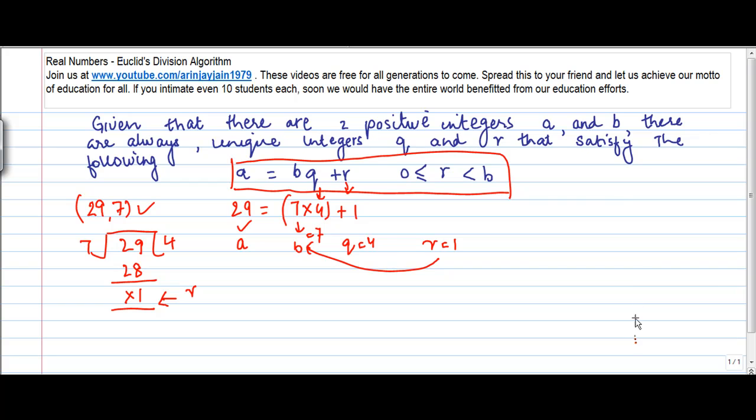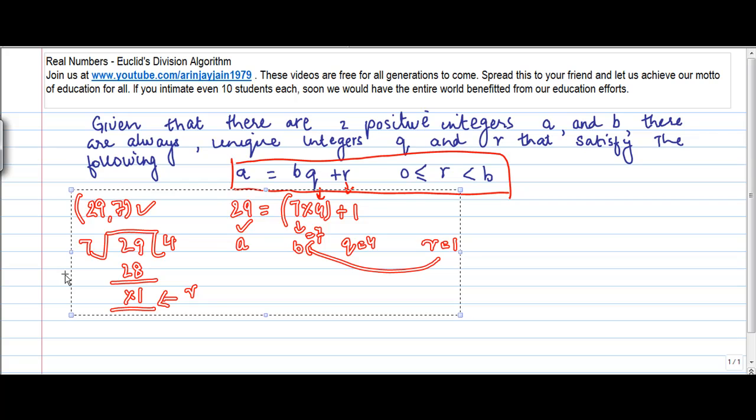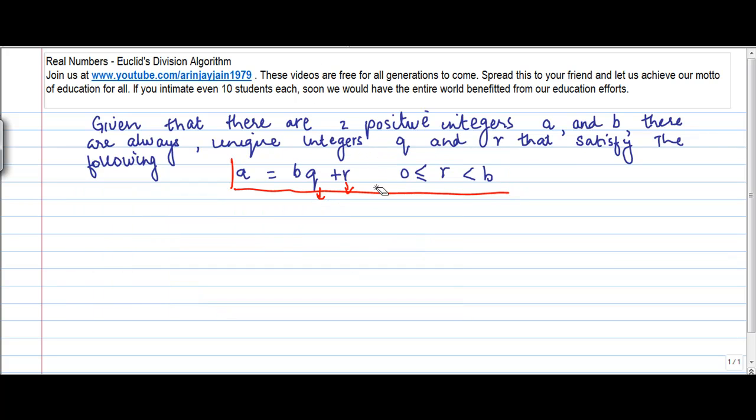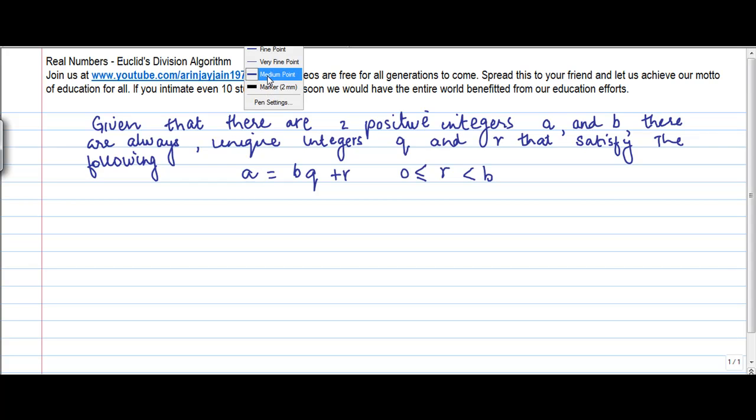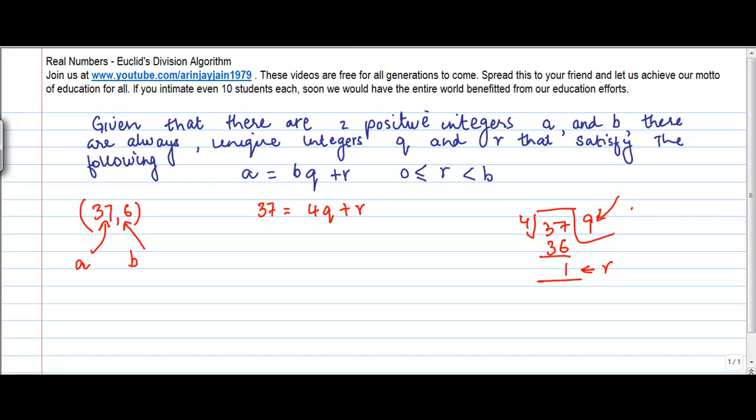Let's take 37 and 6, which are both positive integers. So for any two positive integers a and b, a equals 37 equals 4 into q plus r. How do you find the value of q and r? You divide 37 by 4, so you get 9 here, 36 and 1 here. So 1 is r and 9 is q, or this can be written as 4 into 9 plus 1. So again, this equation holds true.